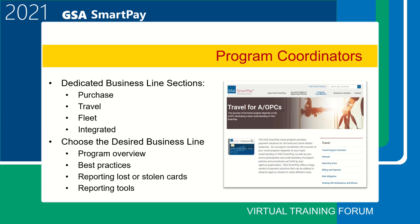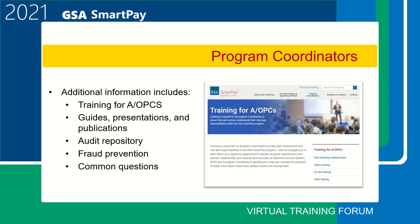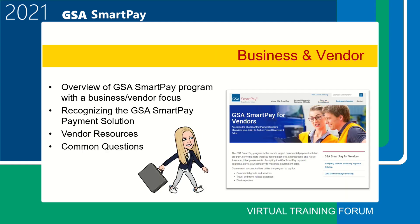All program coordinator specific information can be found under the program coordinator tab in the main top navigation. Similar to account holders and approving officials, the program coordinator information is organized by business line: purchase, travel, fleet, and integrated. Choose the desired business line to find information about program overview, best practices, reporting a lost or stolen card, reporting tools, and more. Additional information for AOPCs includes training, resources, an audit repository that stores GSA SmartPay multi-agency and agency-specific audit information, fraud prevention, and common questions related to managing a GSA SmartPay program.